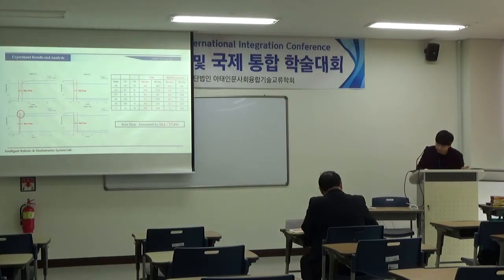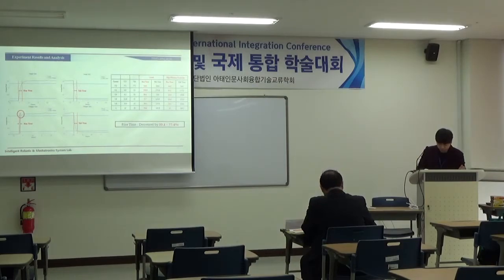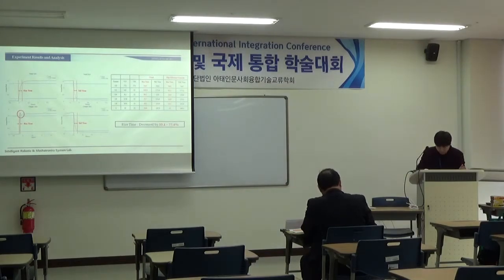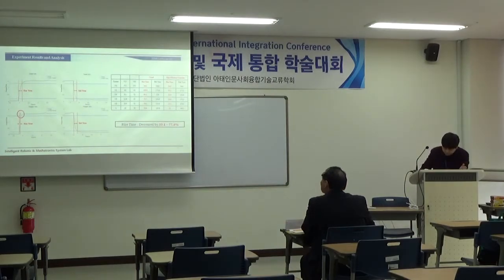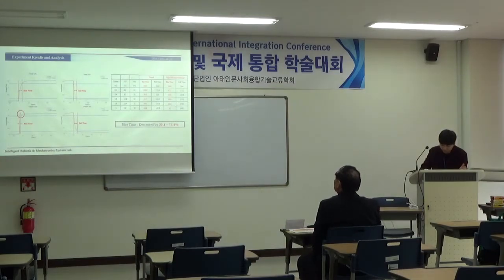The table shows that the rise time decreases with the use of the control according to the input current. It can be found that the efficiency improvement ranges from 33.1% to 77.4%. The reason why efficiency decreases as the input current value increases is because the difference between VH voltages can decrease due to the limitation of VH available in the power supply.